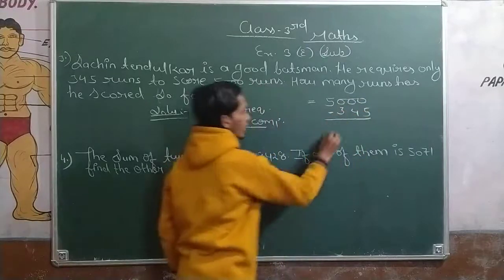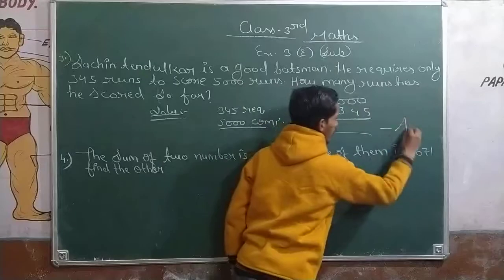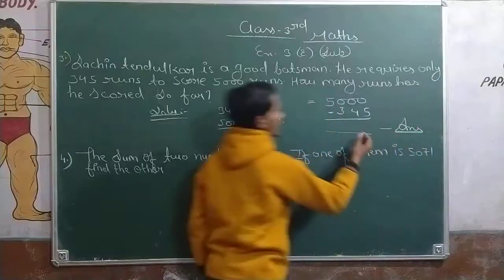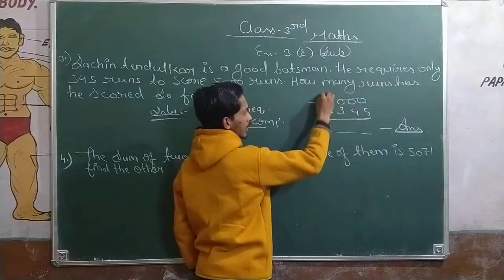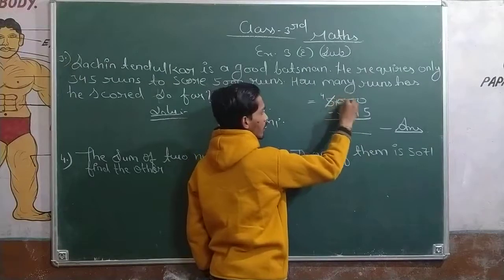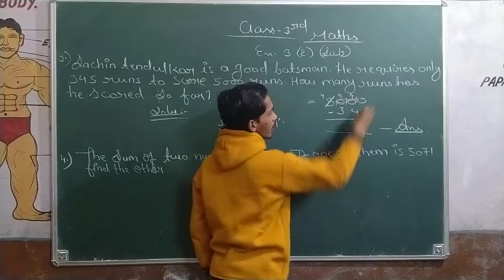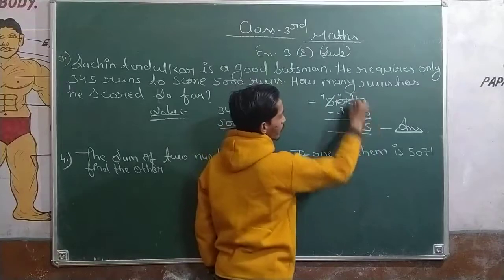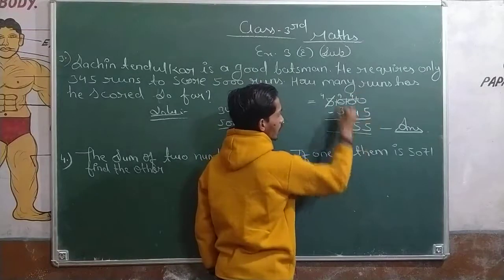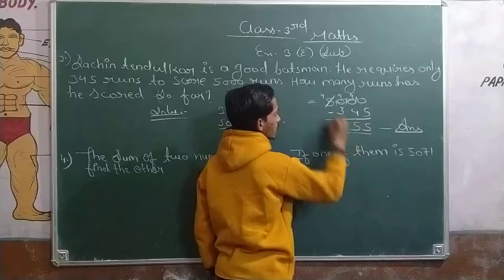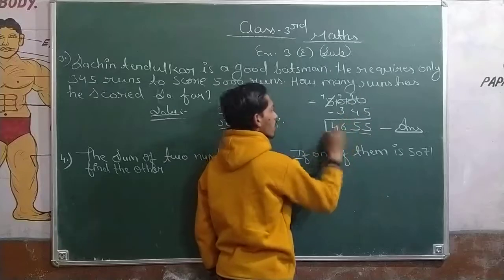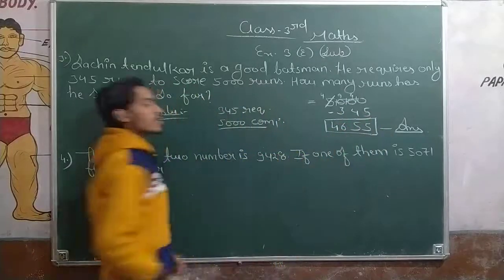5,000 minus 345. This rate is required to get a lot of minus. So many runs are required. Press the answer to the question. You should get a lot of minus. 10, 9, 10, 9, 10, 10 minus 5, 9 minus 4, 5, 9 minus 3, 6 and 4. This is what is your answer, 4,655.